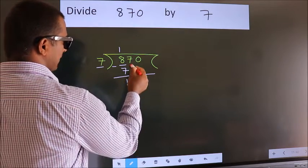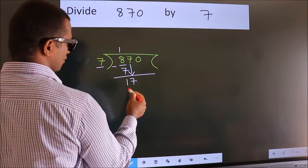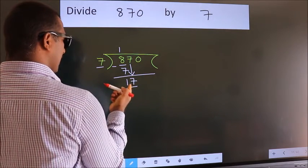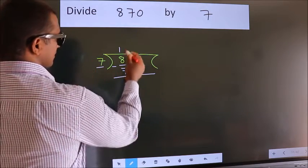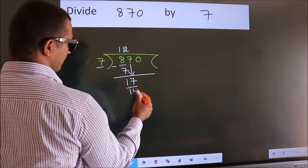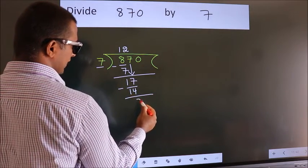After this, bring down the beside number, so 7 down, making 17. A number close to 17 in the 7 table is 7 twos, which is 14. Now we subtract and get 3.